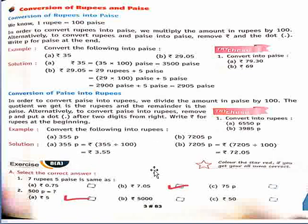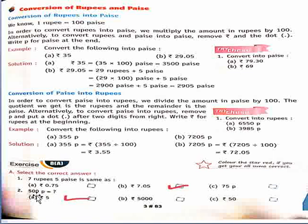Now start our exercise 8A. Part a: select the correct answer. First question: 7 rupees 5 paise is same as — firstly symbol use karenge rupees ka, then 7 rupees and 5 paise dot ke baad 05 likhenge. So option b is correct. Question number 2: 500 paise — convert karna hai rupees mein, 100 se divide karenge, answer hai rupees 5. So option a is correct.